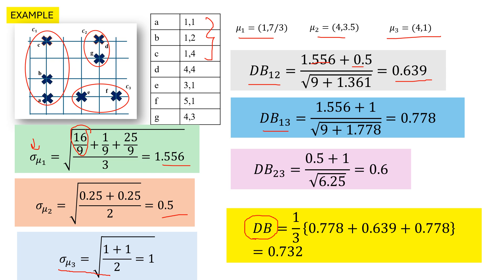While computing the Davis-Bouldin index, we pick the maximum db_ij for each cluster. For C1, we compare db_12 and db_13 — the bigger value is 0.778, so we pick that. For C2, we compare db_12 and db_23, again picking the bigger one. For C3, we compare db_23 and db_13, giving 0.778. This is how we compute the Davis-Bouldin index for the entire clustering — first pairwise, then averaged over all clusters.